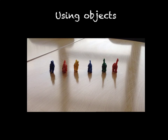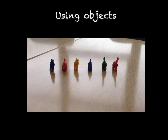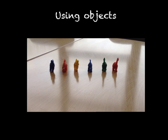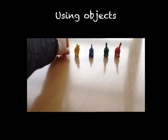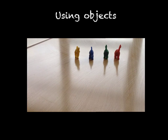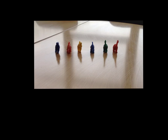First we introduce the concept of subtraction by taking away objects and counting how many are left. So there are 6 dinosaurs to go for a walk. How many dinosaurs are left? We then ask the children to write a number sentence to show this. So 6 take away 2 equals 4.